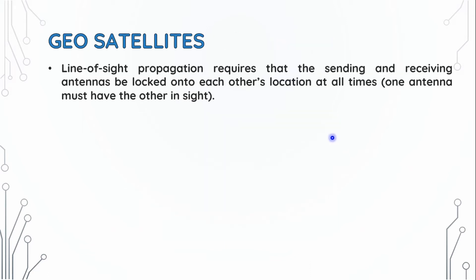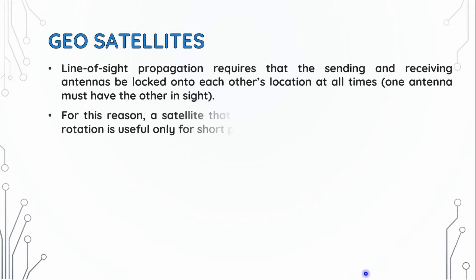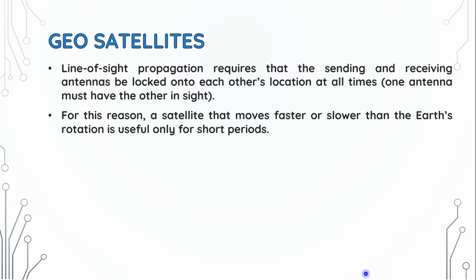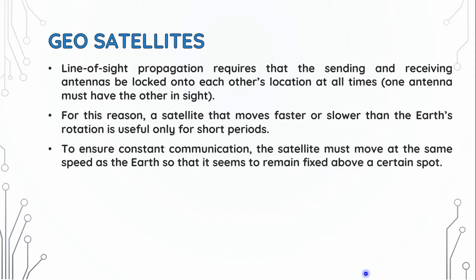Line-of-sight propagation requires that the sending and receiving antennas be locked onto each other's location at all times. One antenna must have the other inside its view. For this reason, a satellite that moves faster or slower than the earth's rotation is useful only for short periods. To ensure constant communication, the satellite must move at the same speed as the earth, so that it seems to remain fixed above a certain spot.